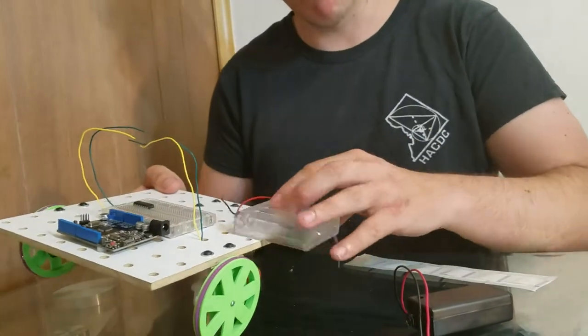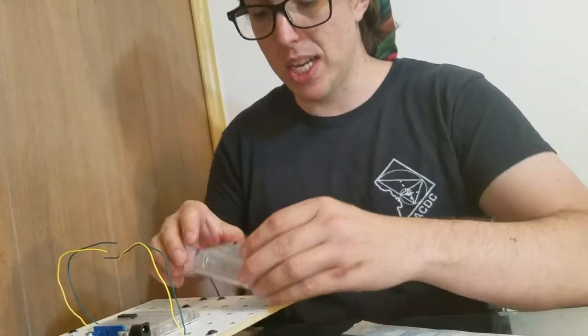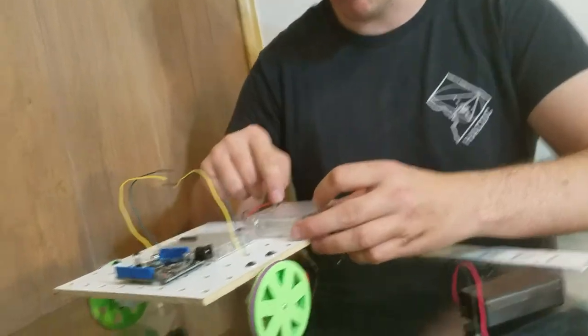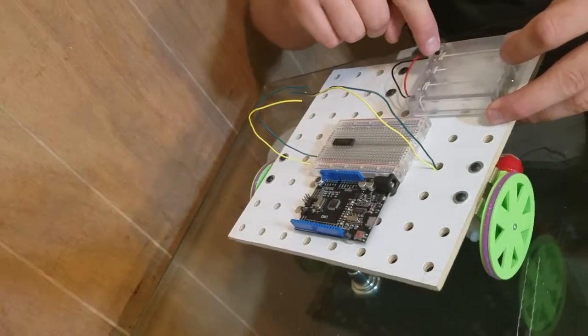This is the battery holder, the thing that holds the batteries for the motor. We're going to attach it right here. We want the switch to be up. This is the on-off switch.